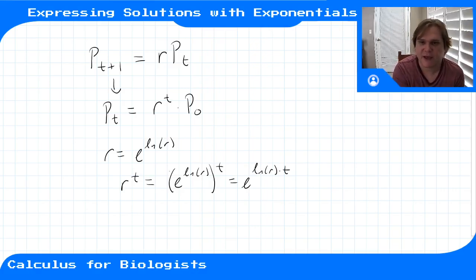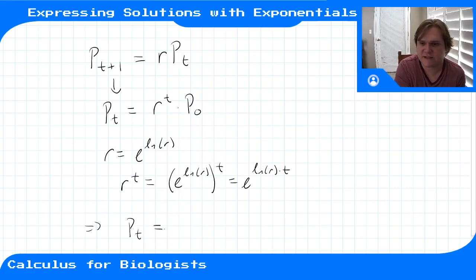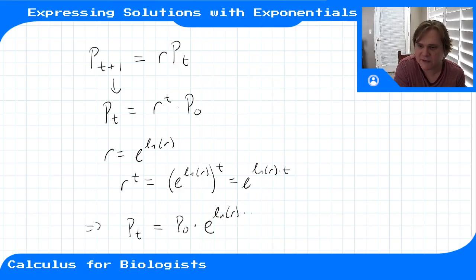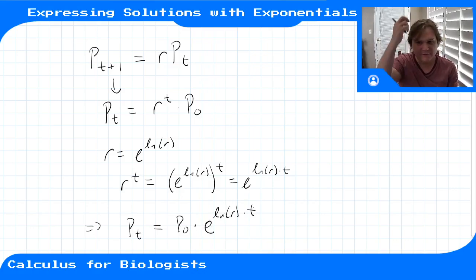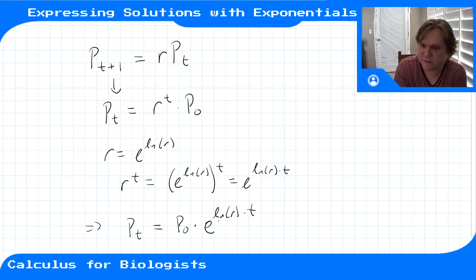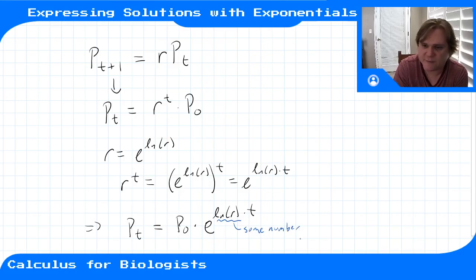So r is just some number, and ln(r) is just some other number. Our solution can be written as p equals p-zero, the initial population, times e to the ln(r) times t. This will typically be some number that we compute, so our function is p at time t equals p at time zero times e to some number times time.